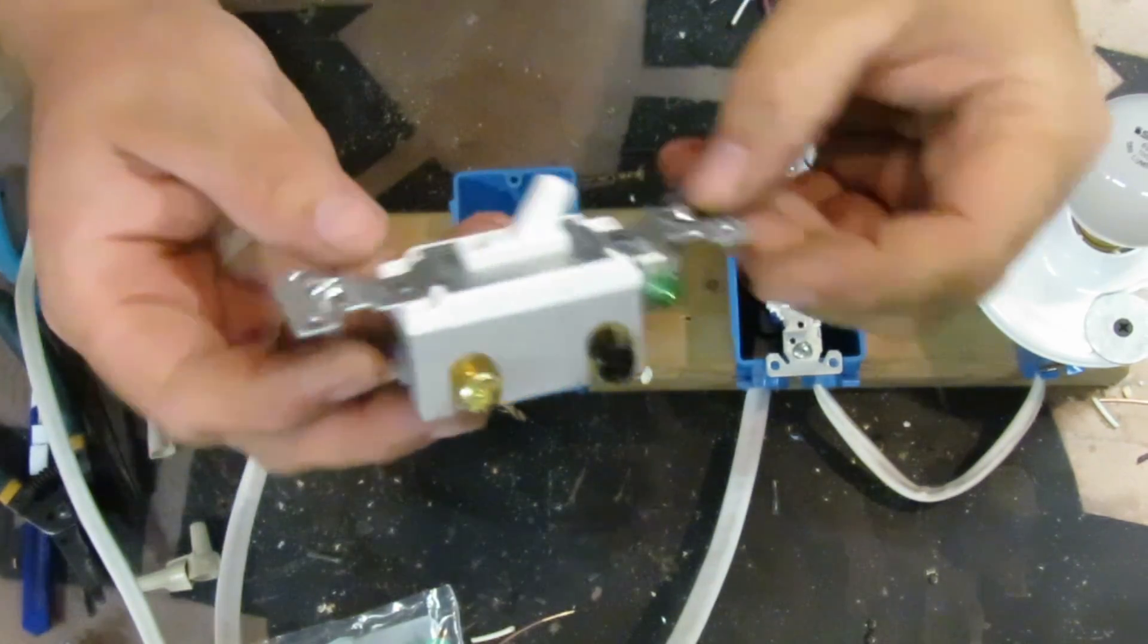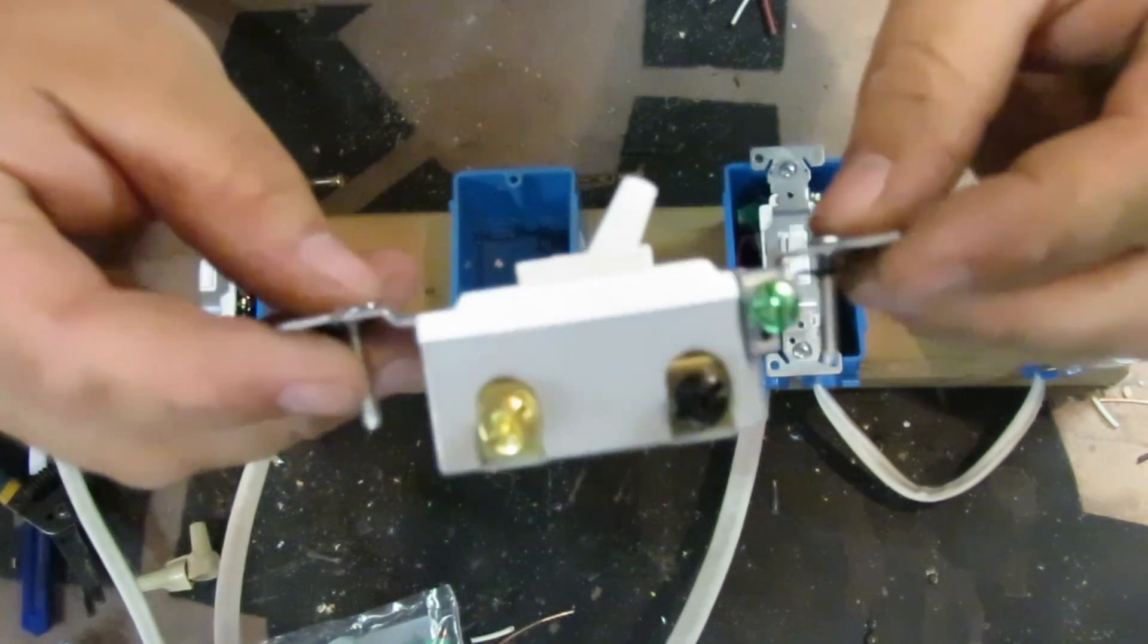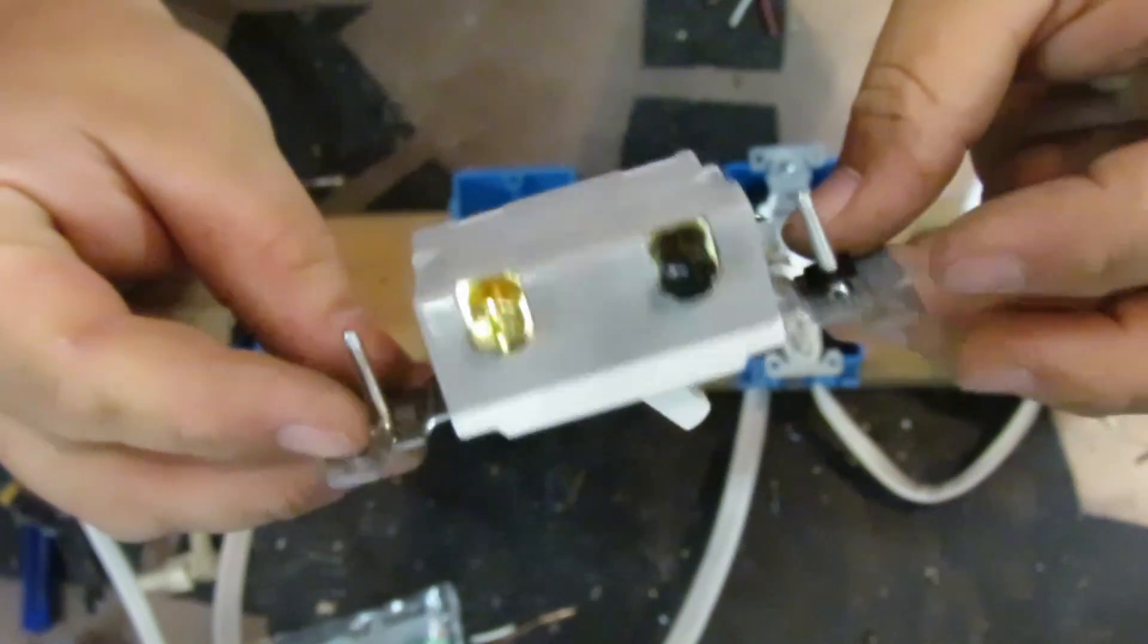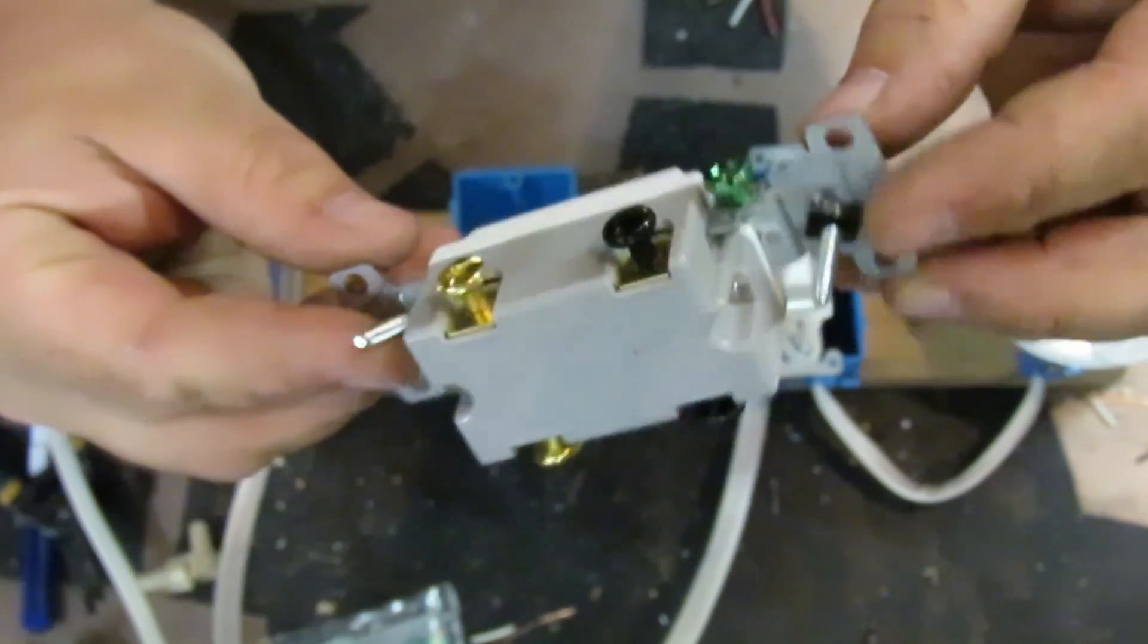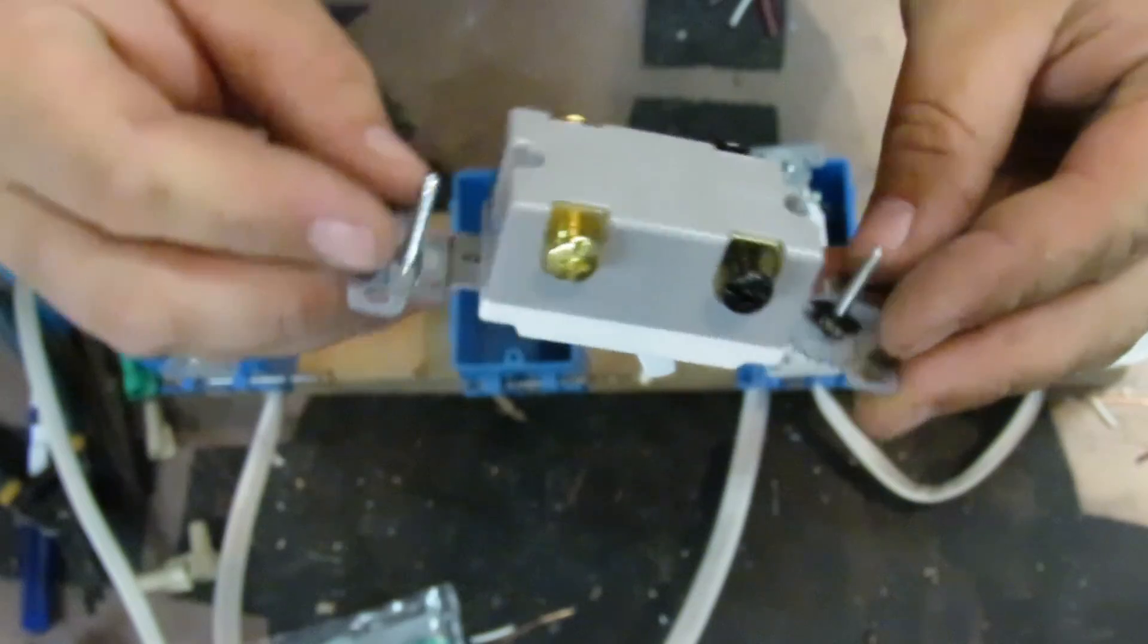This is our four-way switch. The top has black screws for one set of the travelers, and the bottom set has brass screws for the other set.